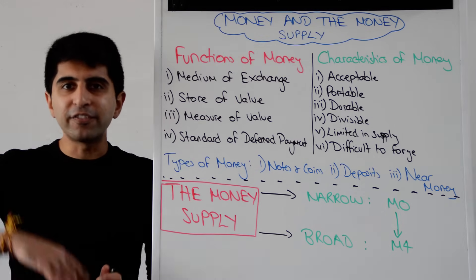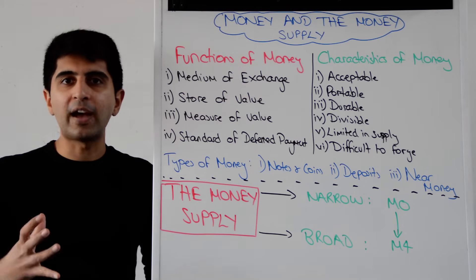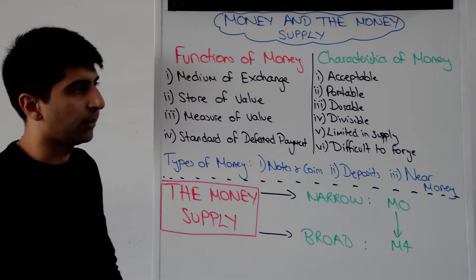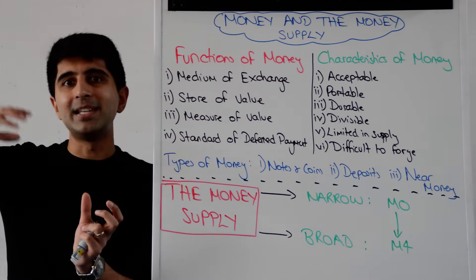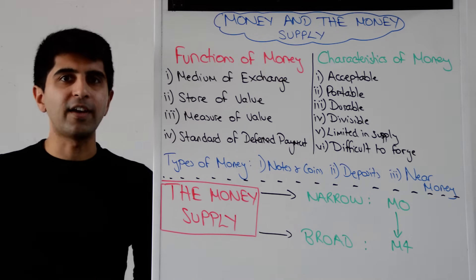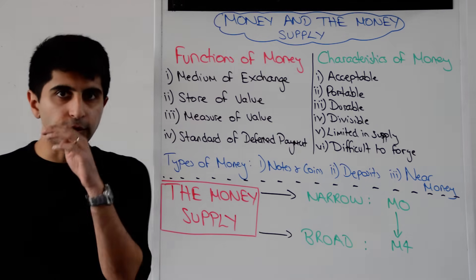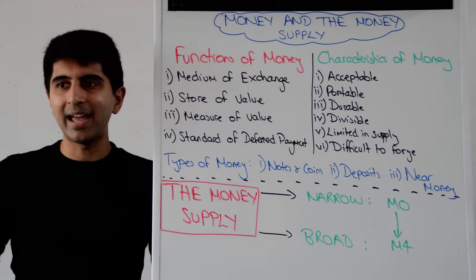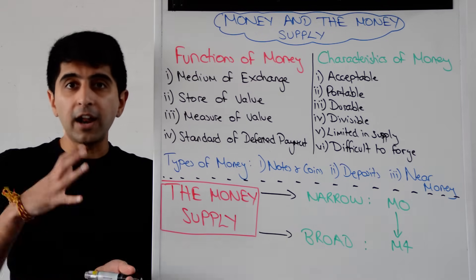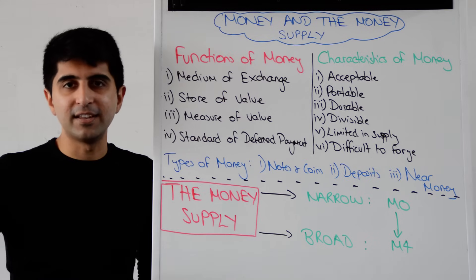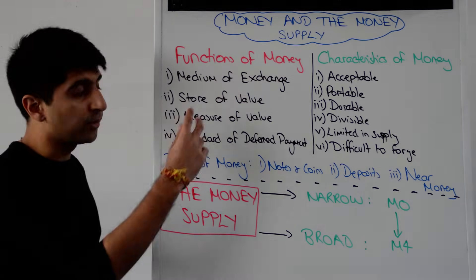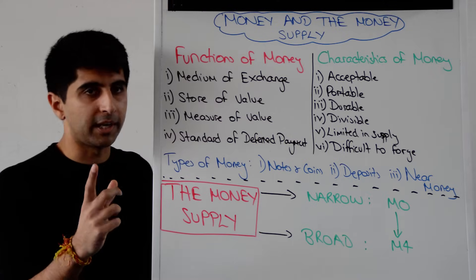Think about it — inflation over time can erode the store of value function of money, whereby £100 in 10 years' time may not have the same intrinsic value. So inflation can erode the store of value idea. But the basic idea is that £100 in your bank account now will still be there in 10 years, even though its actual value might decrease because of inflation. You can still store money — that's important.